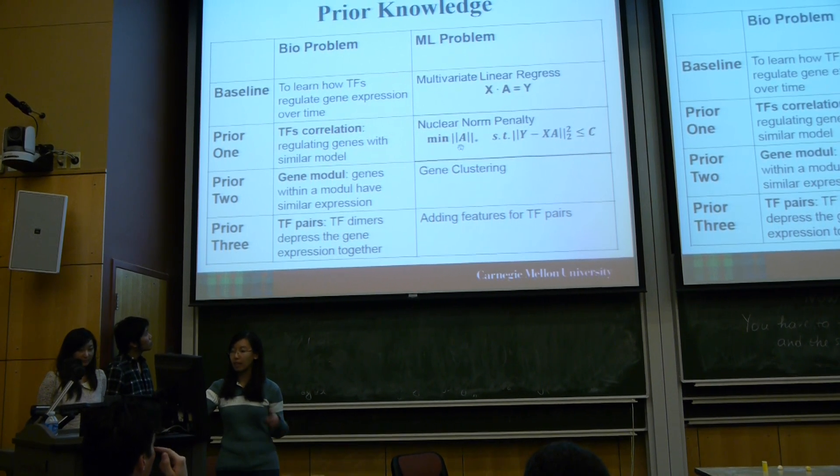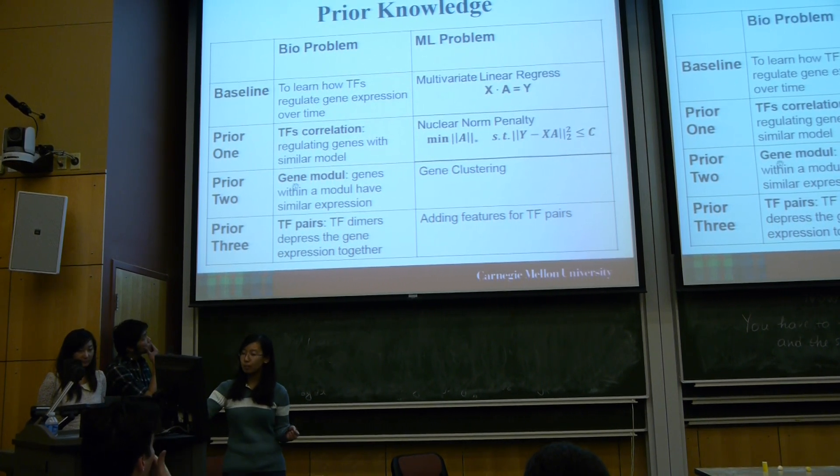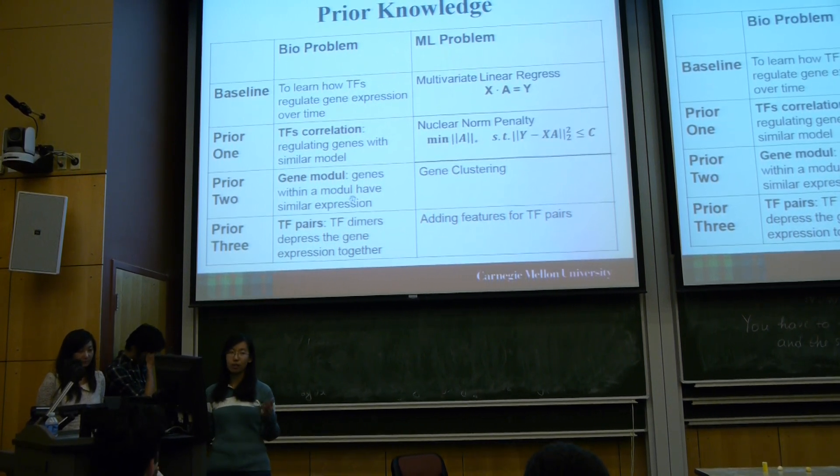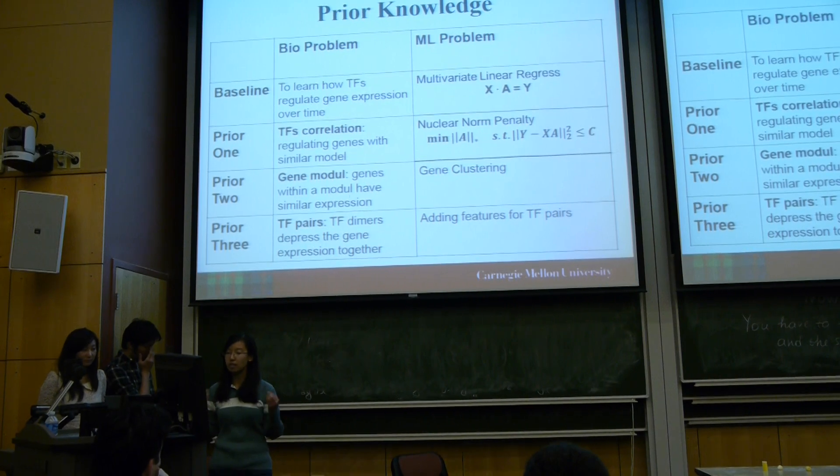The second prior is that genes usually express with a certain pattern within a certain model, so we cluster the genes and then conduct the prediction.